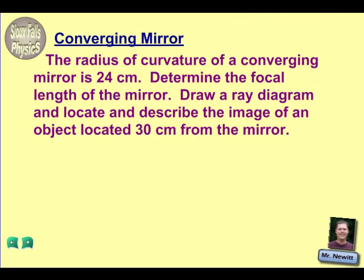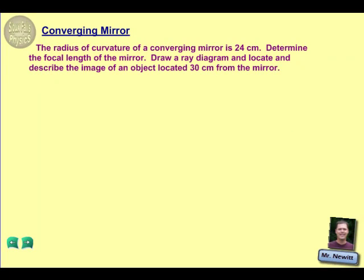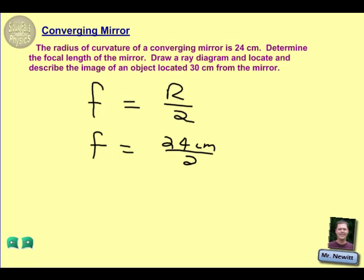So let's look first at the focal length of the mirror. Remember that is directly related to the radius of curvature. We know that the focal length, F, is equal to essentially half of that radius, or divided by 2. So, to find the focal length, we'll put in our radius of curvature, which they give us as 24, divided by 2, that will give us a focal length of 12 centimeters.